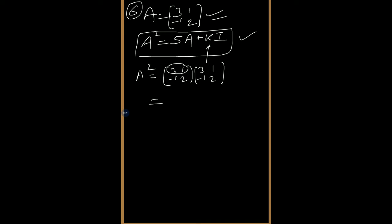Multiply it: first row by first column, then minus 1, then 3 + 2. Second row by first column gives -3 - 2 = -5. Second row by second column gives -1 + 4 = 3. So A² = [8, 5; -5, 3].